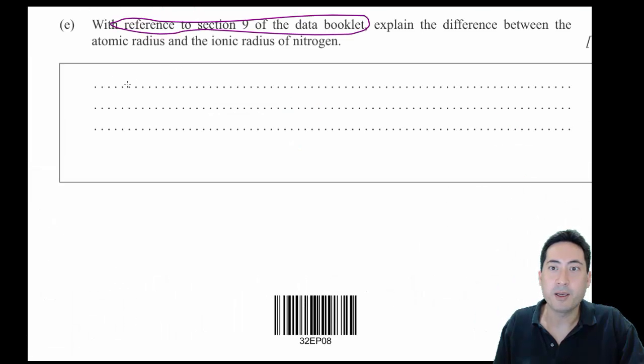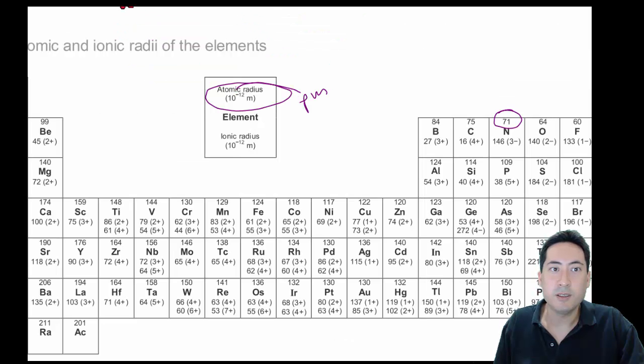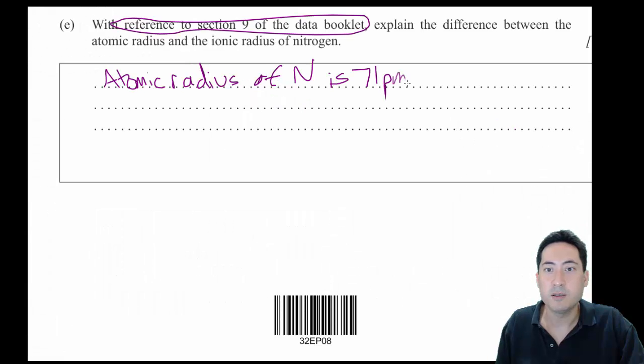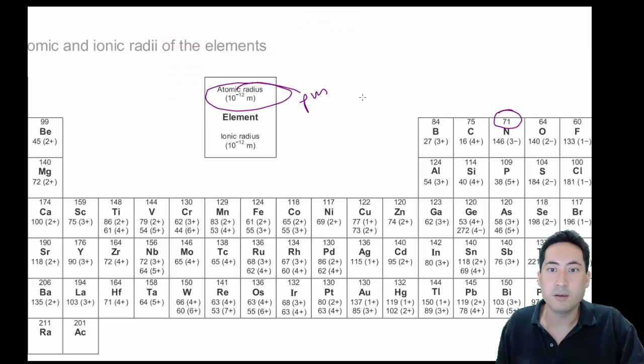Okay, so explain the difference. So the atomic radius of nitrogen is 71 picometers, which is smaller than the ionic radius, which is 146.